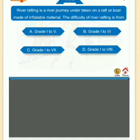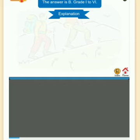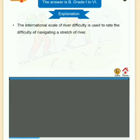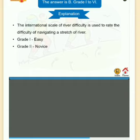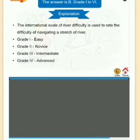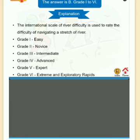Test yourself: River rafting involves a river journey on a raft or boat made of inflatable material. The difficulty of river rafting ranges from — A. Grade 1 to 5, B. Grade 1 to 6, C. Grade 1 to 7, D. Grade 1 to 8. The answer is B, Grade 1 to 6. The international scale of river difficulty rates: Grade 1 Easy, Grade 2 Novice, Grade 3 Intermediate, Grade 4 Advanced, Grade 5 Expert, Grade 6 Extreme and Exploratory Rapids.